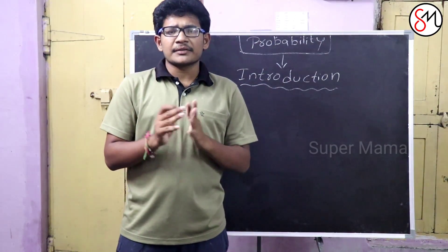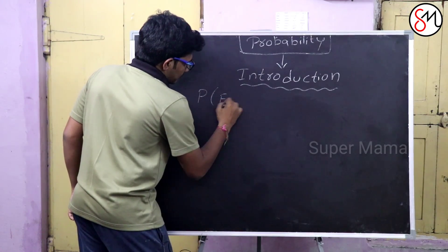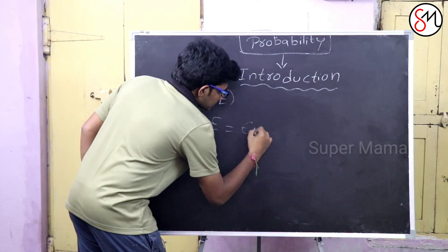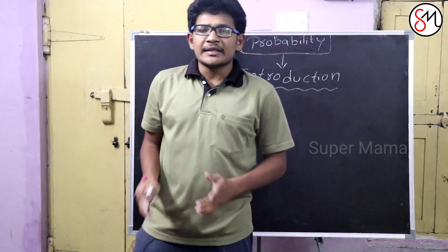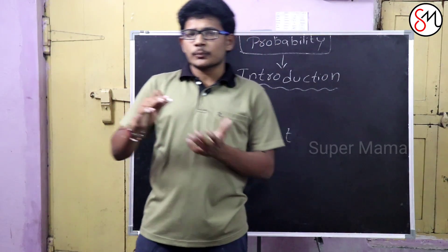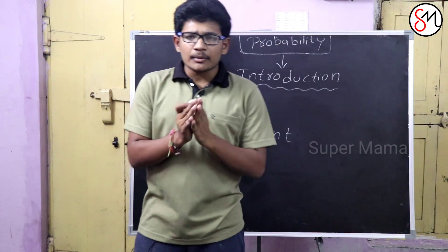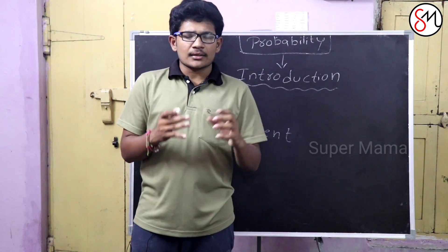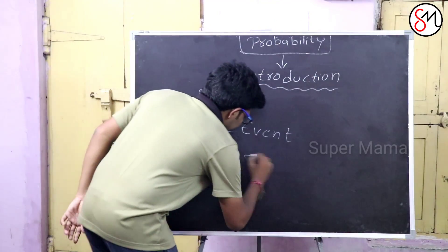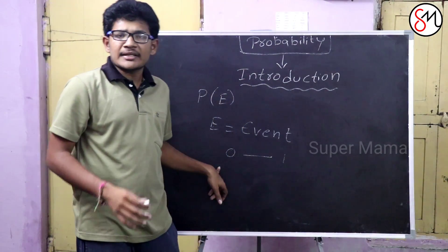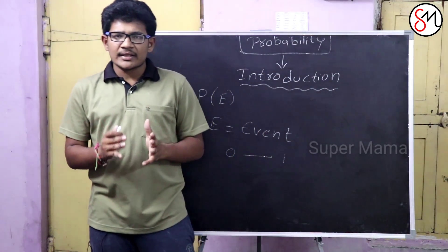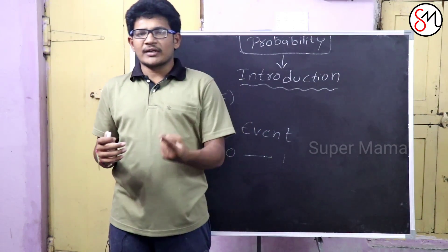Probability — we will denote it as P of E. E is equal to event. The probability value is either 0 or 1. 0 is a result and 1 is a result. The answer is either 0 or 1.